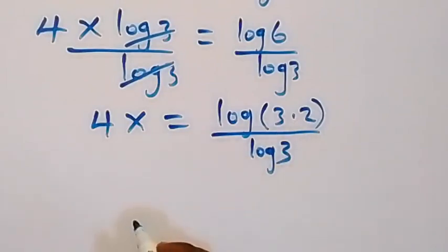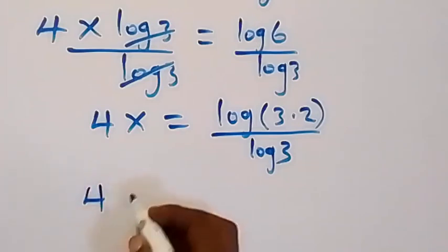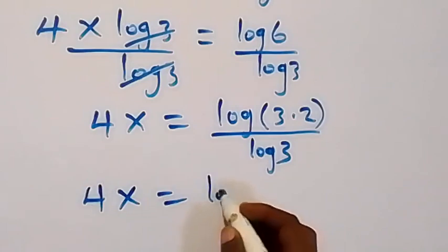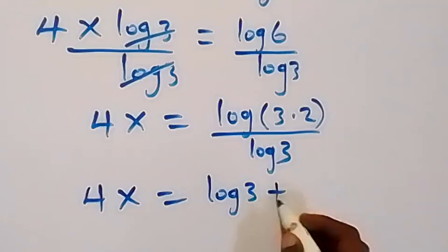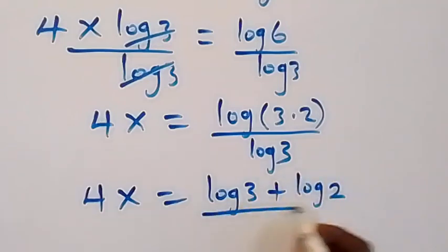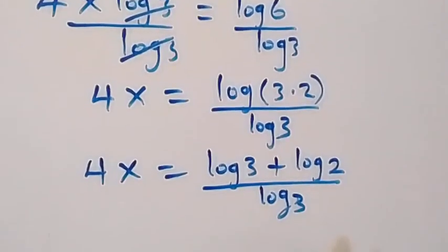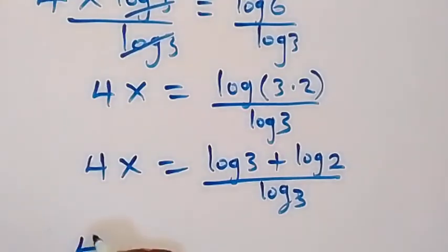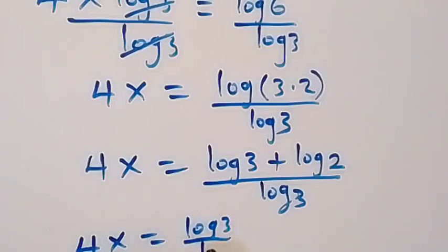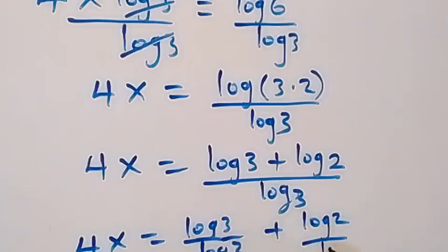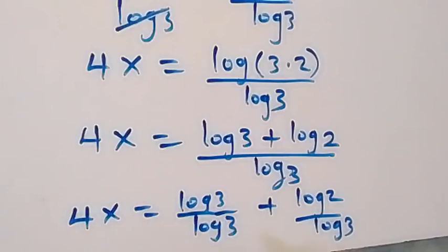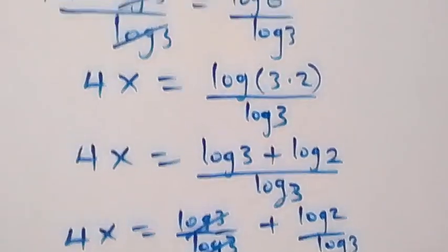So we have log(3 × 2) over log 3, which gives us 4x equals (log 3 + log 2) over log 3. From here we can separate into two fractions: 4x equals log 3 over log 3, plus log 2 over log 3. Log 3 over log 3 cancels out to 1, so what we have now is 4x equals 1.